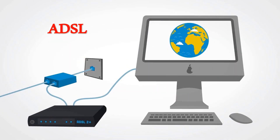ADSL is a type of digital subscriber line technology. It allows faster data transmission over copper telephone lines than a conventional voice fan modem can provide. Bandwidth and bit rate are asymmetric. ADSL offers high transmission speeds for video and voice to homes over an ordinary copper telephone wire. It is most cost effective in areas with a low market penetration of cable TV.